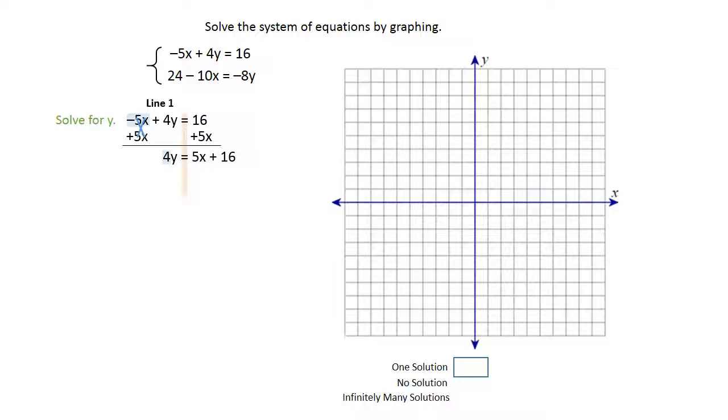Then you're going to notice that you have to divide by the 4 in front of the y, so go ahead and do that all three places, and that leaves you with y equals 5 fourths x plus 4, because 16 divided by 4 is 4.